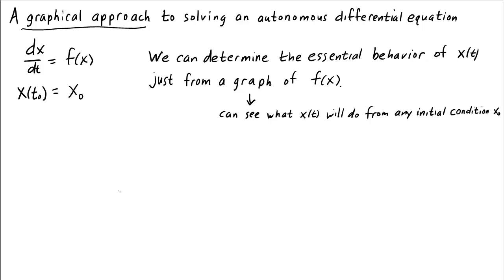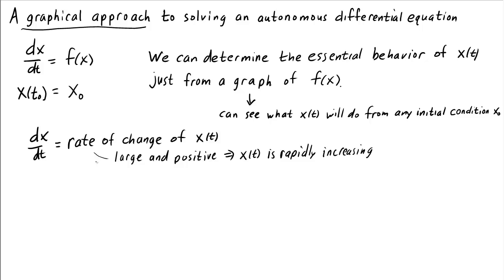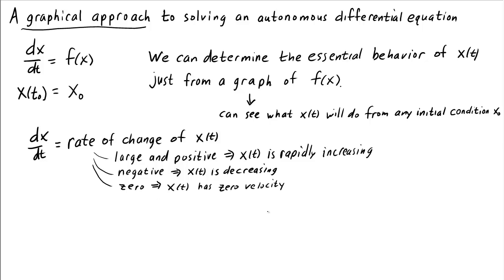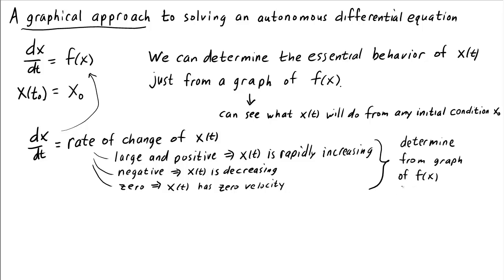How can we do this? Well, the derivative dx/dt is the rate of change of x. If dx/dt is large and positive, then we know x is increasing at a fast rate. If it's negative, x of t is decreasing. And if it's zero, x has zero velocity. How can we graphically determine whether dx/dt is large, positive, negative, or zero? Well, dx/dt is just f of x, so we can look at the graph of f of x and just look up the velocity of x.